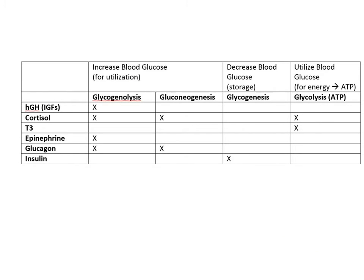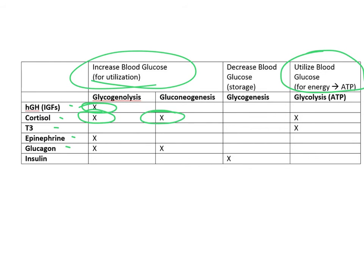Looking at the hormones that regulate metabolism, human growth hormone, cortisol, T3, epinephrine, and glucagon all act to either increase blood glucose or increase its utilization for energy. Human growth hormone and glucagon promote glycogenolysis, increasing blood glucose by breaking down glycogen. Cortisol similarly increases glycogenolysis and also increases gluconeogenesis. T3 stimulates glycolysis to increase energy supplies, and epinephrine provides the body with increased glucose for utilization.